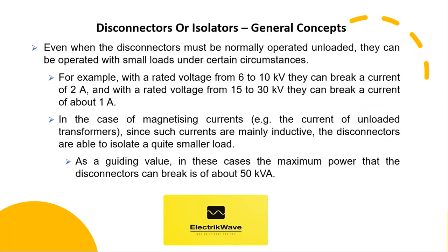Even when Disconnectors must normally be operated unloaded, they can be operated with small loads under certain circumstances. For example, with a rated voltage from 6 to 10 kV they can break a current of 2 amperes, and with a rated voltage from 15 to 30 kV they can break a current of about 1 ampere. In the case of magnetizing currents, such as the current of unloaded transformers, since such currents are mainly inductive, Disconnectors are able to isolate a quite smaller load. As a guiding value, the maximum power that Disconnectors can break in these cases is about 50 kVA.